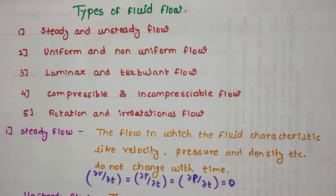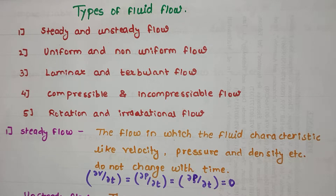The first type of fluid flow is steady and unsteady flow. The second type is uniform flow and non-uniform flow. The third type is laminar flow and turbulent flow. The fourth type is compressible flow and incompressible flow. And the last type is rotational flow and irrotational flow.